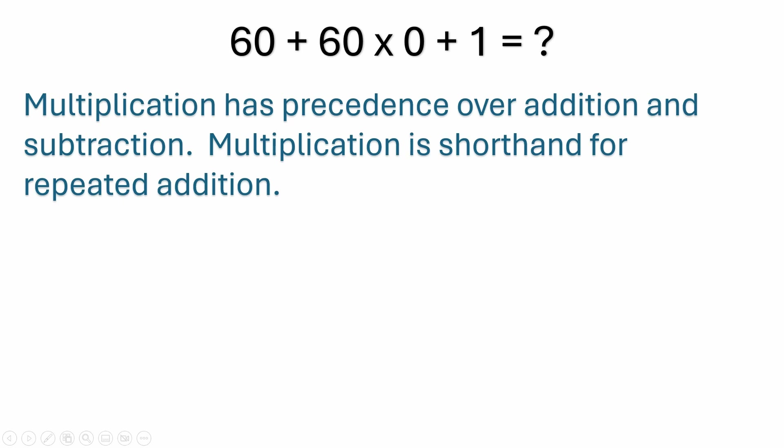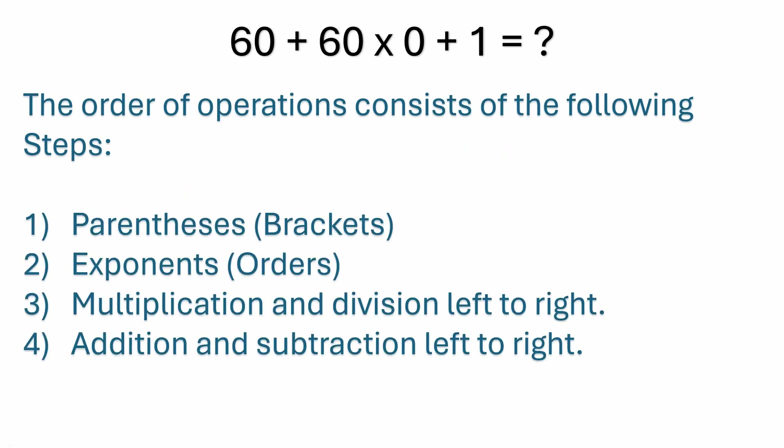Actually, the way this works is you've got an order of operations which is basically four steps. First, you look for parentheses or brackets — depending on what you call them, they're just grouping symbols. They tell you that if you see brackets or parentheses, you want to prioritize the order of operations inside of those.